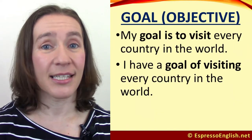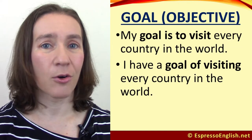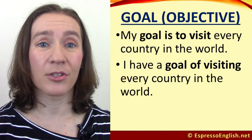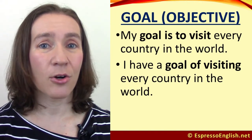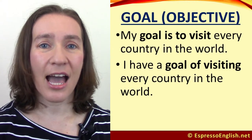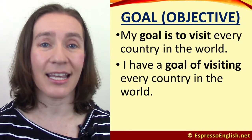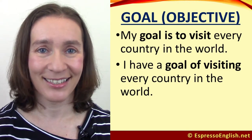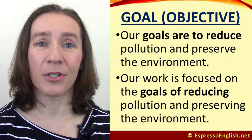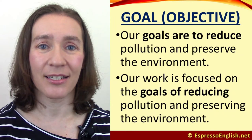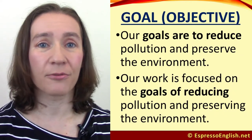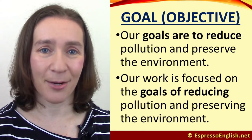We can express goals in two ways: goal plus a form of the verb to be plus the infinitive, or goal of plus the -ing form. For example: My goal is to visit every country in the world. Or: I have a goal of visiting every country in the world. Another example: Our goals are to reduce pollution and preserve the environment. Or: Our work is focused on the goals of reducing pollution and preserving the environment.